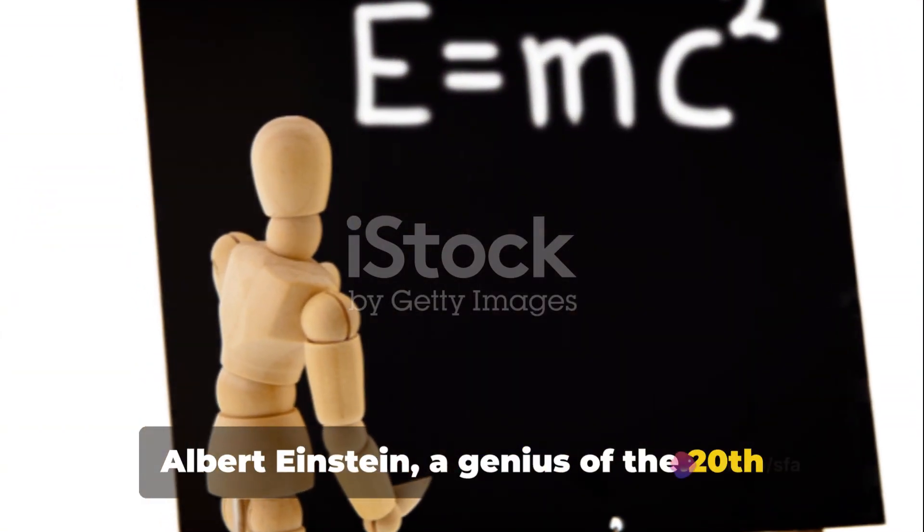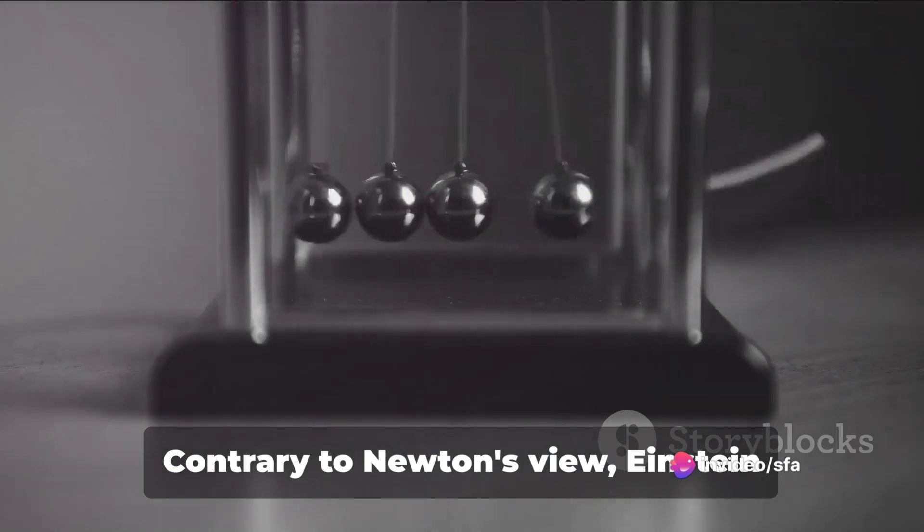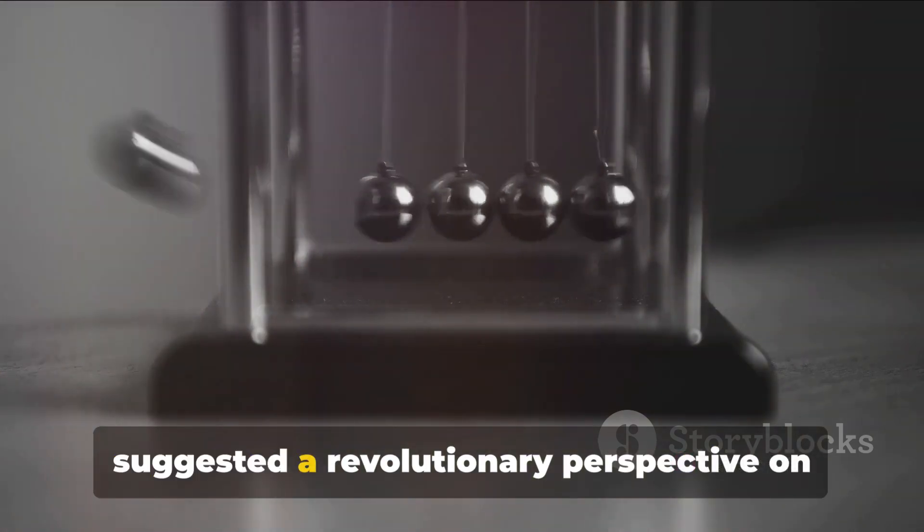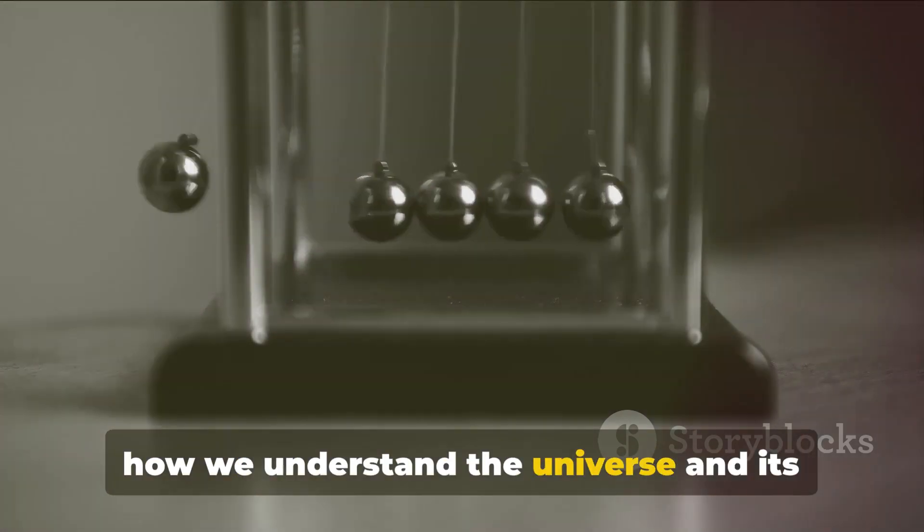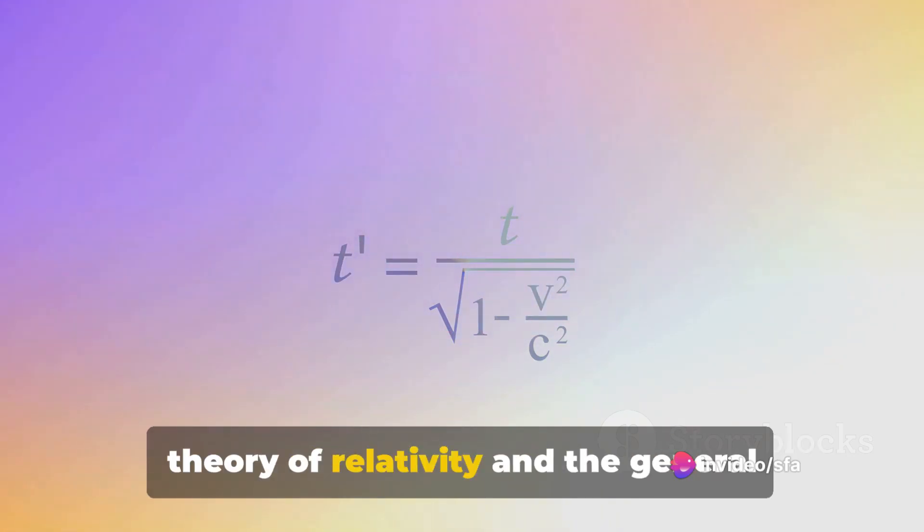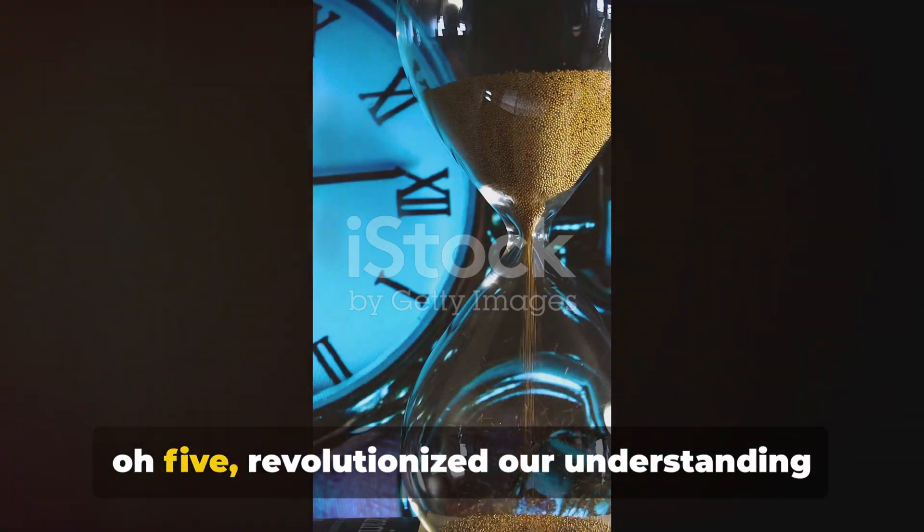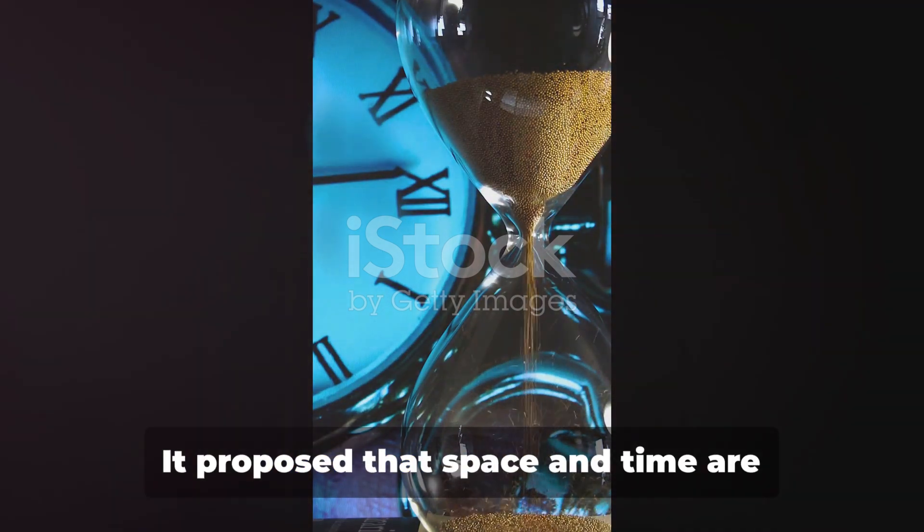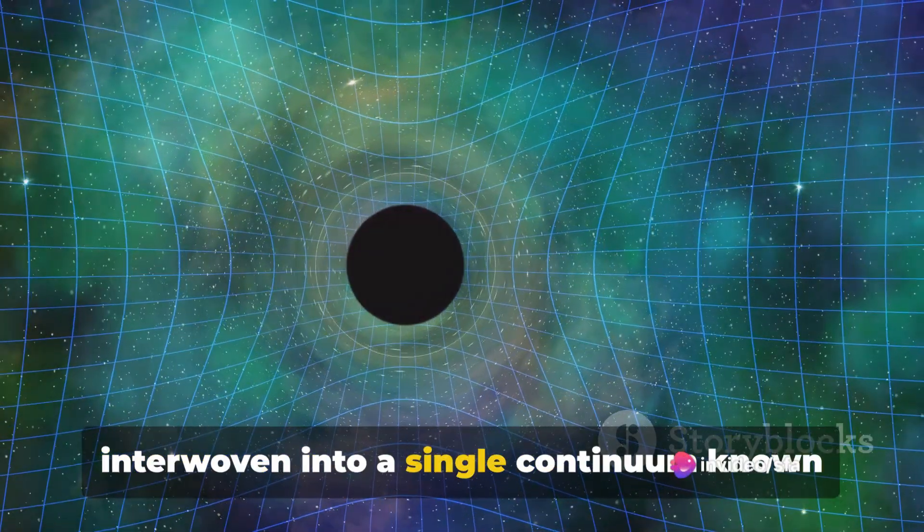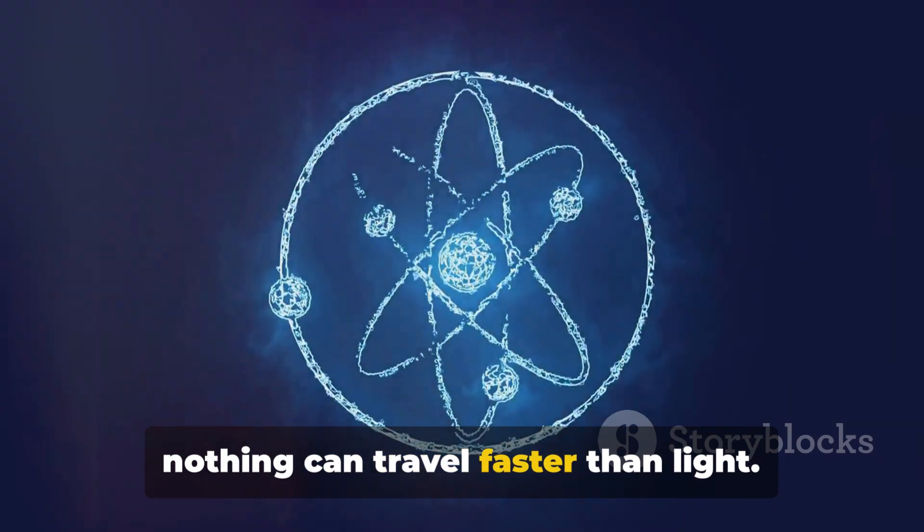Albert Einstein, a genius of the 20th century, didn't quite agree with Newton's theory of instantaneous gravity. Contrary to Newton's view, Einstein suggested a revolutionary perspective on how we understand the universe and its laws, especially gravity. Enter Einstein's theory of relativity, a two-part theory that includes the special theory of relativity and the general theory of relativity. The special theory, published in 1905, revolutionized our understanding of space and time. It proposed that space and time are interwoven into a single continuum known as space-time. But more importantly for our discussion on gravity, it introduced the notion that nothing can travel faster than light.